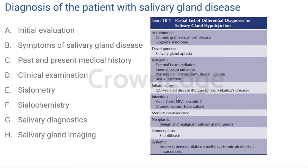The workup steps include: symptoms of salivary gland disease, past and present medical history, clinical examination, sialometry, sialochemistry, salivary diagnostics, and salivary gland imaging. We will be dealing with each of these headings in a systematic way as we go on with the class.